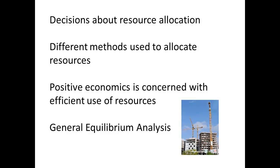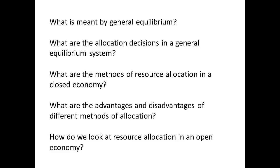The wants of society usually exceed the available resources of labour and capital, so there needs to be decisions taken about the allocation of these resources. There are different ways of taking these decisions, and the allocation is a part of general equilibrium analysis, which considers allocation of resources in production and the distribution of what is produced. General equilibrium means equilibrium in the market for all commodities and resources at the same time. At this point there should be no forces that cause a change in behaviour.